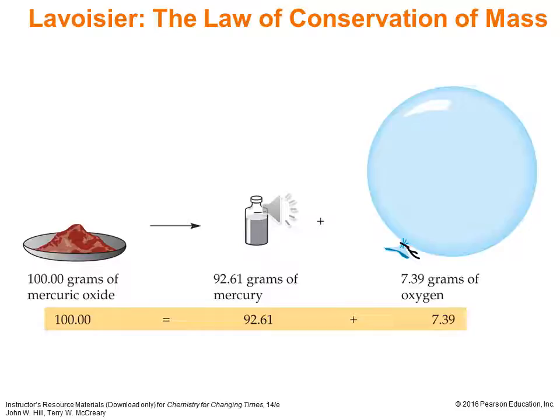Lavoisier was able to disprove phlogiston because people were mainly concerned with the mass of the tangible stuff — looking at things like mercuric oxide, a red oxide, and then the mercury metal resulting from heating, while ignoring the gas. Lavoisier was capturing even the oxygen gas released on decomposition of mercuric oxide. When he showed he could capture everything, it put the death knell in phlogiston theory and brought us toward a better understanding of the law of conservation of mass.